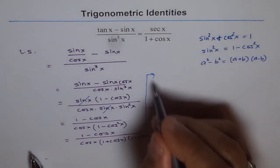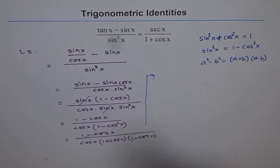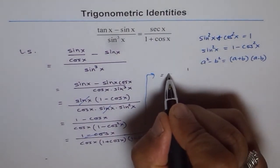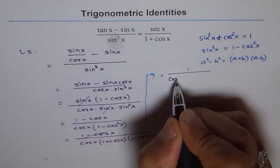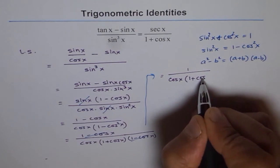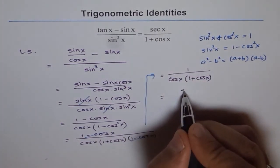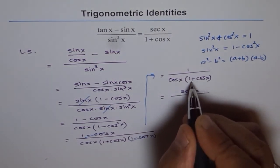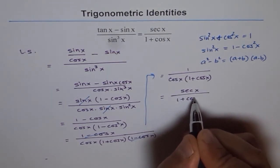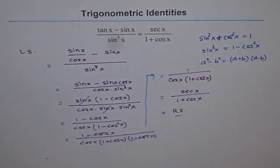The (1 minus cos x) terms cancel out, and we are left with 1 over cos x times (1 plus cos x). Since 1 over cos x is secant x, we can write this as secant x over (1 plus cos x), which is the right side. Therefore, left side equals right side and the trigonometric identity has been proven.